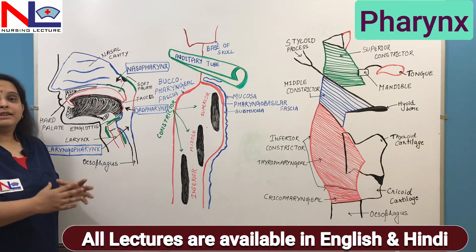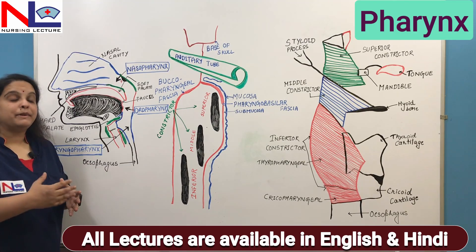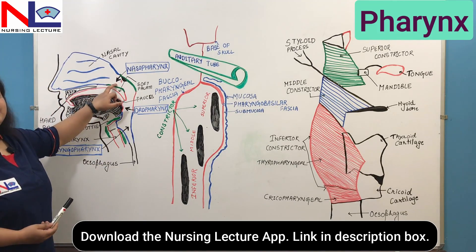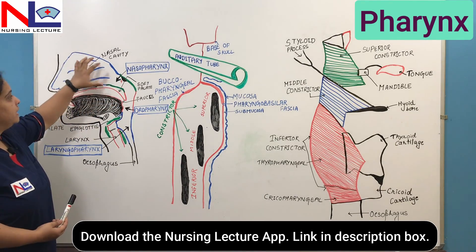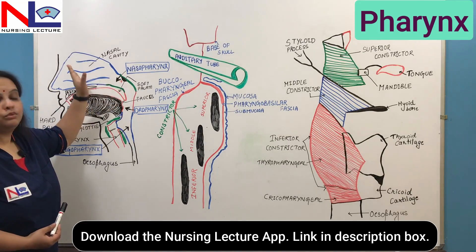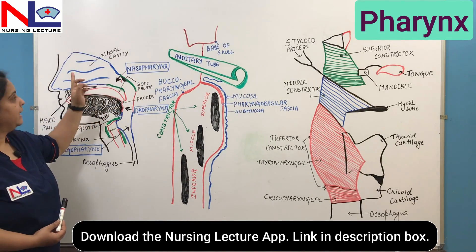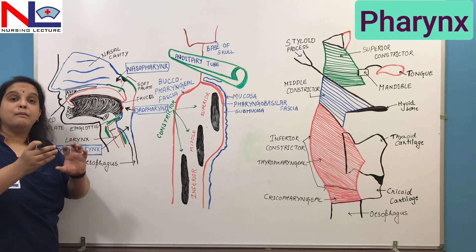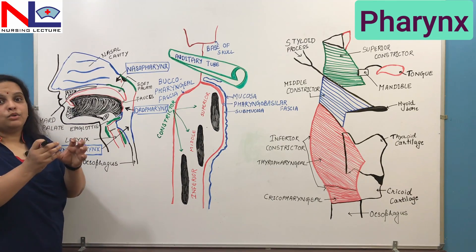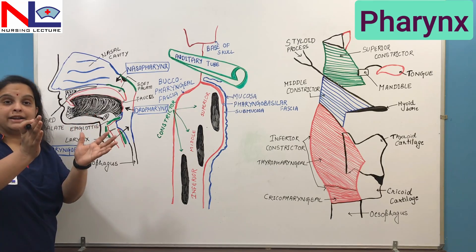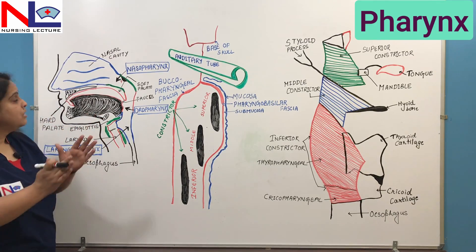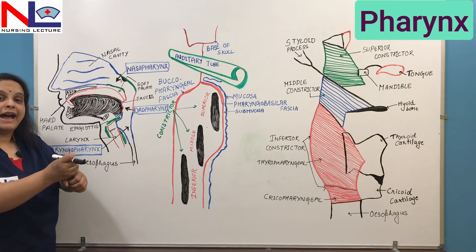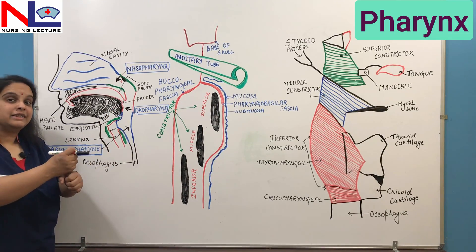The pharynx has three anatomical regions depending on the parts associated with it. The first is the nasopharynx, because the nasal cavity opens posteriorly into this pharyngeal part. Pharynx is a muscular funnel-shaped tube — more wide at the top and narrow at the bottom. In the nasopharyngeal part it is most wide, then it forms a narrower tube, and in the lowermost region it is narrowest.